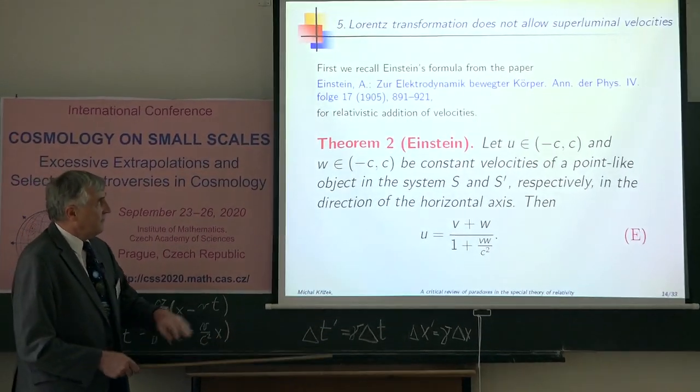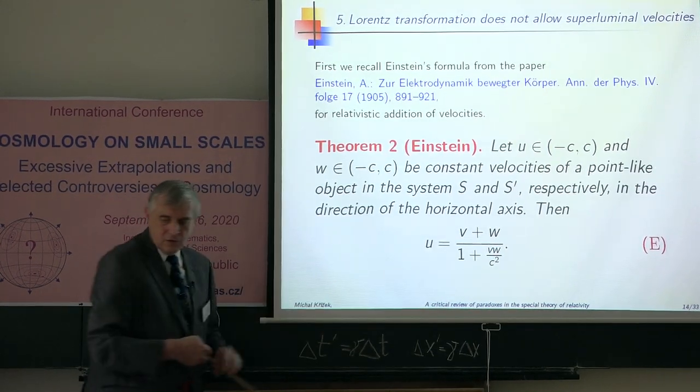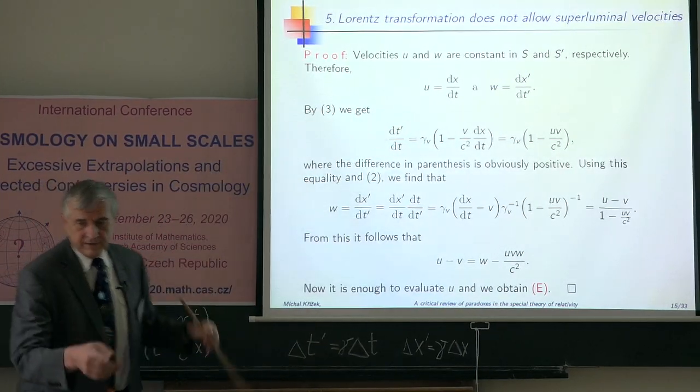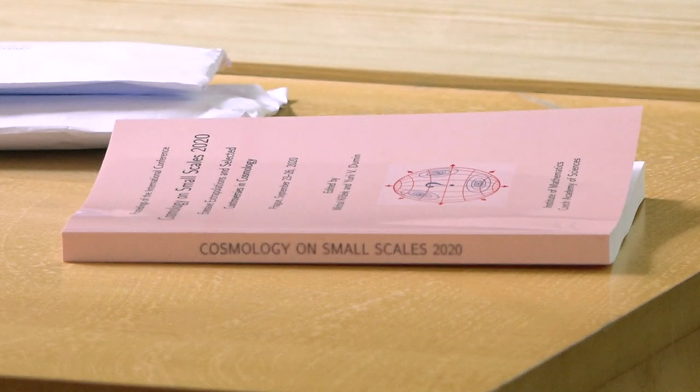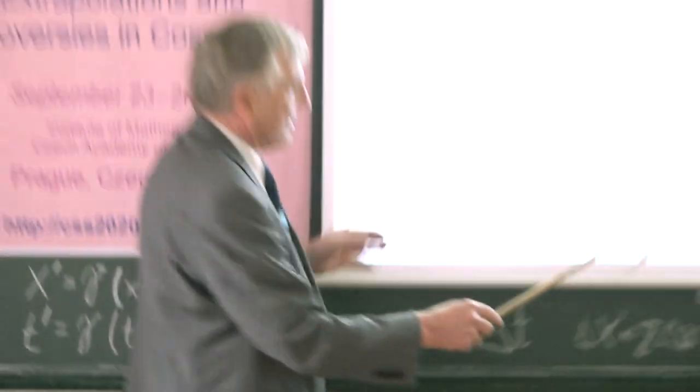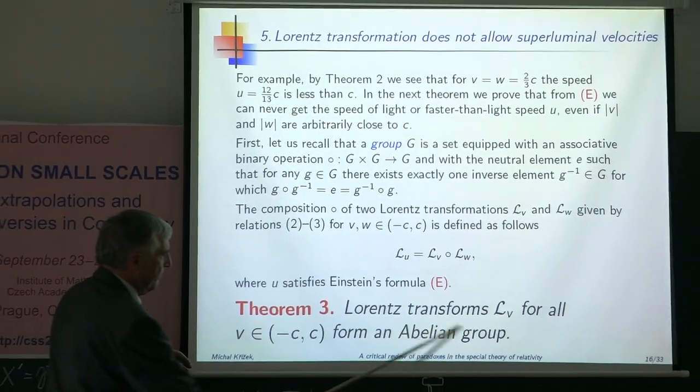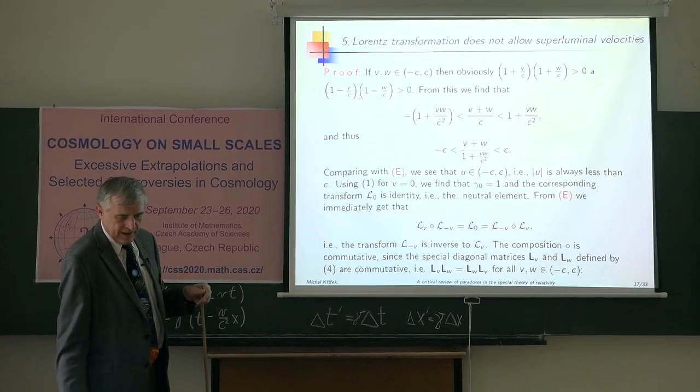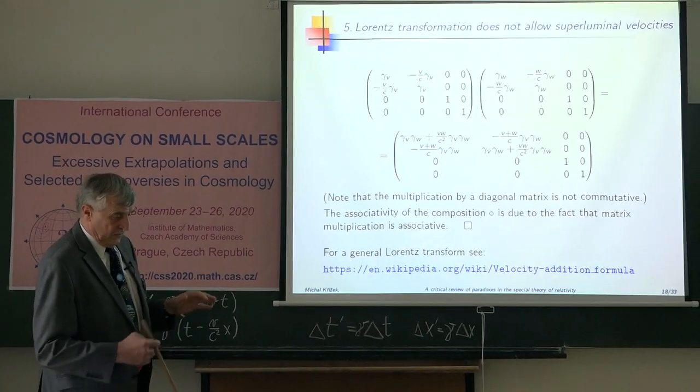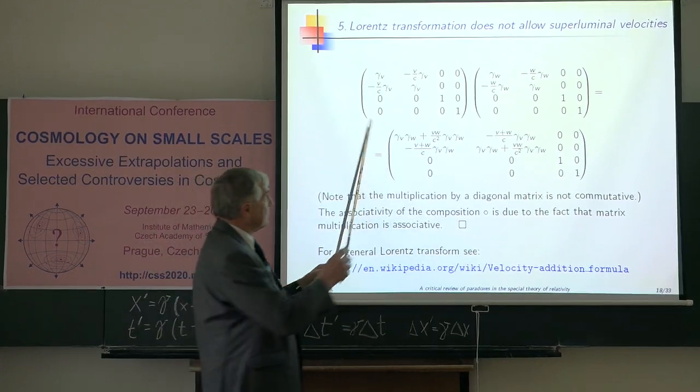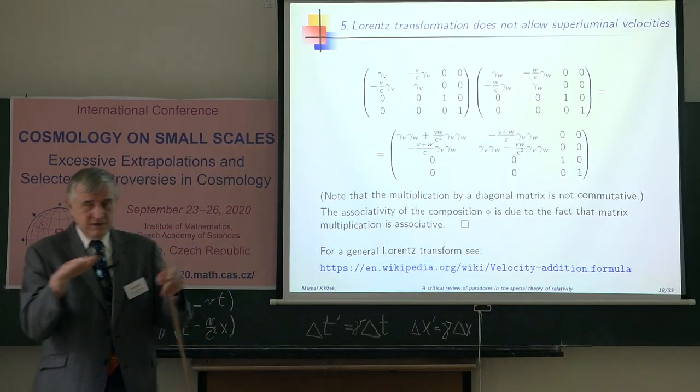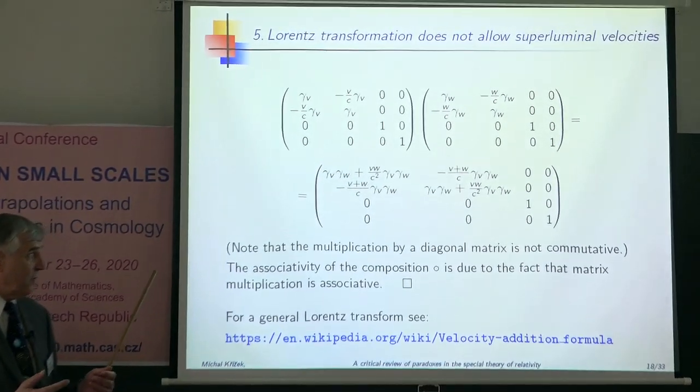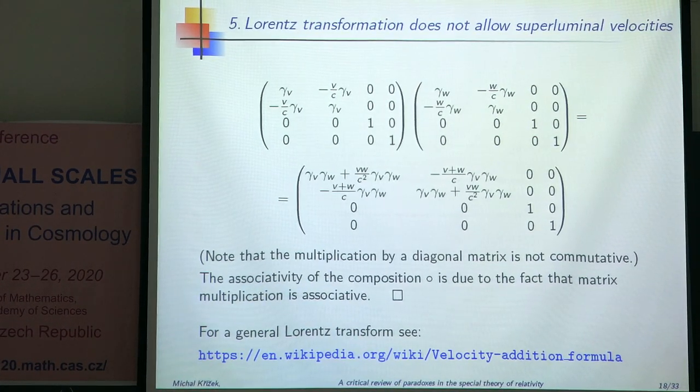I would only briefly recall that Einstein became famous because of this formula how to add velocities. It is relatively simple to prove. You can find proof in these proceedings. I can also easily prove that the Lorentz transformation for all v form an abelian group, a commutative group. You just verify all axioms of group. For instance, if you have two matrices, then they usually do not commute. But they have such a special block form that they commute. Therefore this group is abelian. Because multiplication of matrices is associative operation, it forms a group.